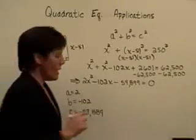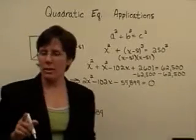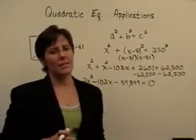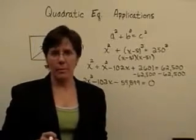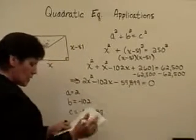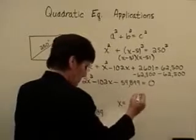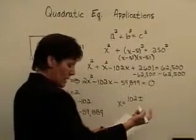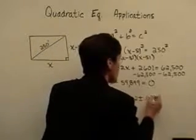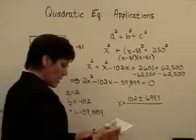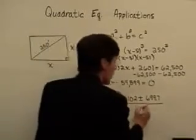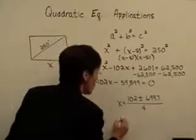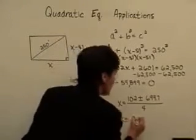The quadratic formula is the opposite of b, plus or minus the square root of b squared minus 4ac, all divided by 2a. It turns out that x equals 102 plus or minus the square root of 489,596. When you take the square root of that, you get 699.7, and you divide all of it by 2 times a, which is 4. Taking 102 plus 699.7 and dividing by 4 gives a solution of 200.4.